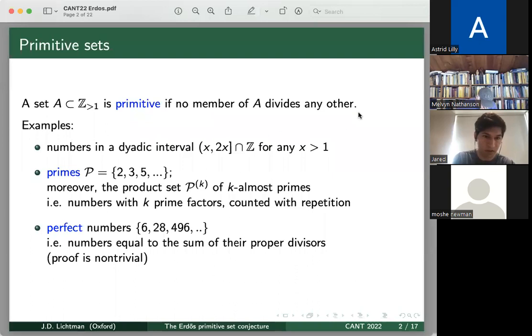Another key example is the set of primes. And moreover, for any k, we'll denote the set of primes by curly P. And moreover, for any integer k, the product set P^(k) of numbers with exactly k prime factors counted with multiplicity is also primitive. And a nice way to see this is that any integer that has k prime factors, all its divisors will have fewer than k prime factors, and all its multiples will have more than k prime factors, when you count with multiplicity at least. And so no two can divide each other.